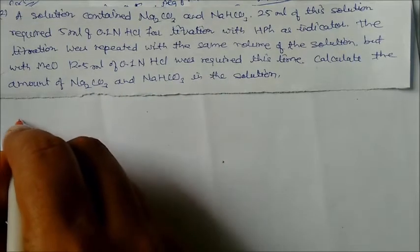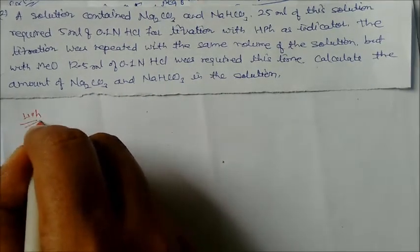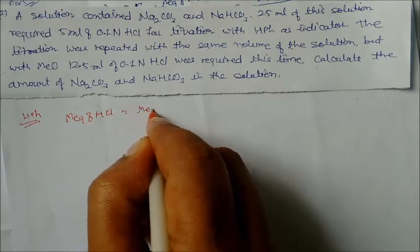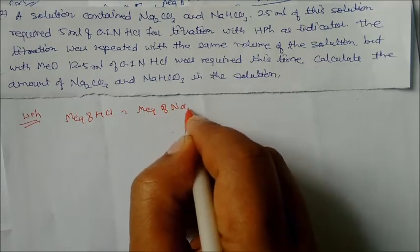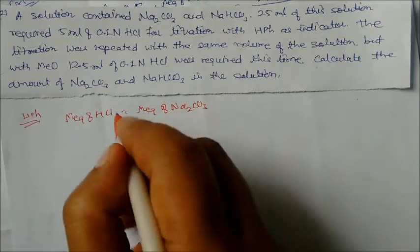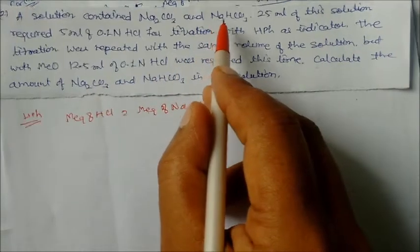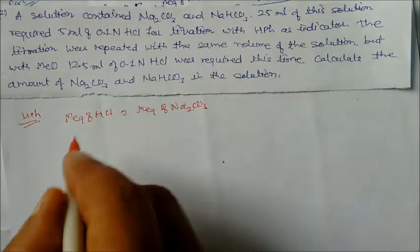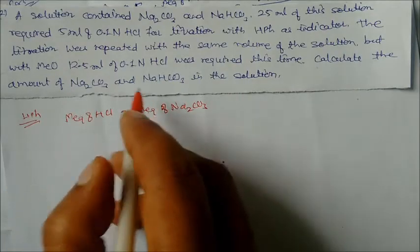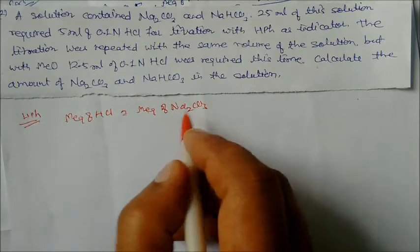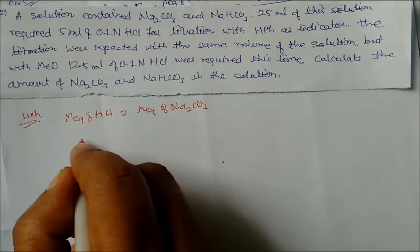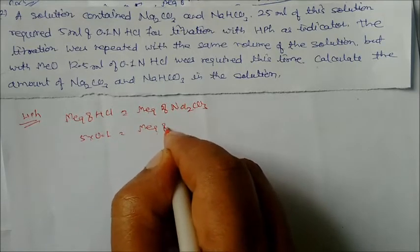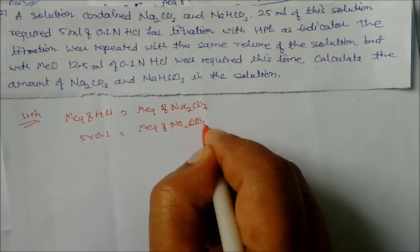This is a neutralization reaction. First, using phenolphthalein as indicator: milliequivalents of HCl = milliequivalents of Na₂CO₃, because NaHCO₃ originally present in the solution does not react in the presence of phenolphthalein. So milliequivalents of HCl = 5 × 0.1 = 0.5, which equals milliequivalents of Na₂CO₃.